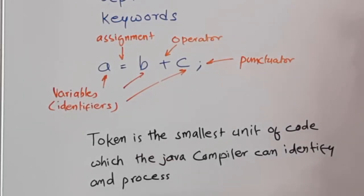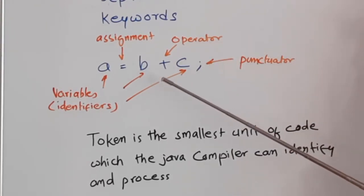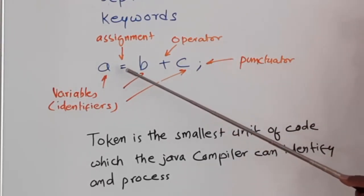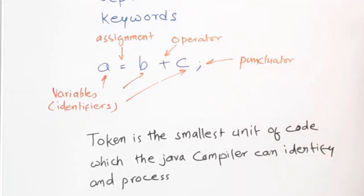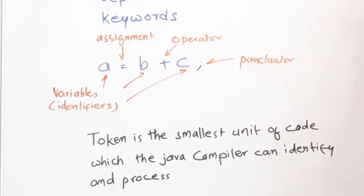In the definition of token, there are different words. It is a smallest unit or it is a single element. Let us say, we have a code of program and in that code, a is an element, equals to is an element, b is an element. Token is a single element or we can say smallest meaningful unit. Smallest meaningful unit which the compiler can understand. Tokens are nothing but Java's character set, the elements of Java character set for the sake of compiler.